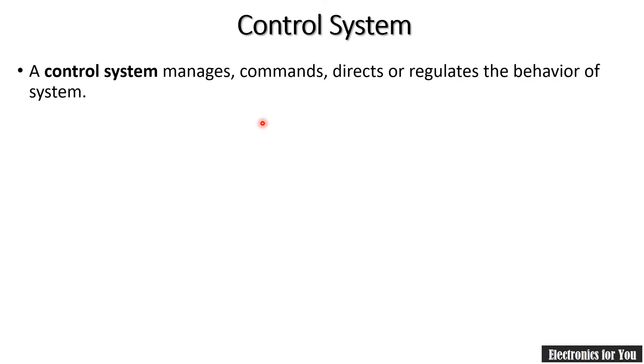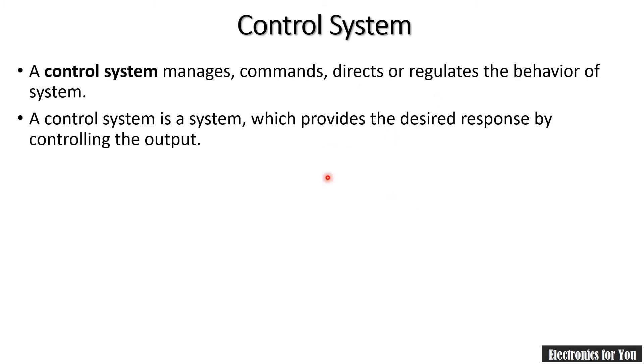Now control system manages, commands, directs, or regulates the behavior of the system. A control system is a system which provides the desired response by controlling the output. Note here that the control system controls the output.